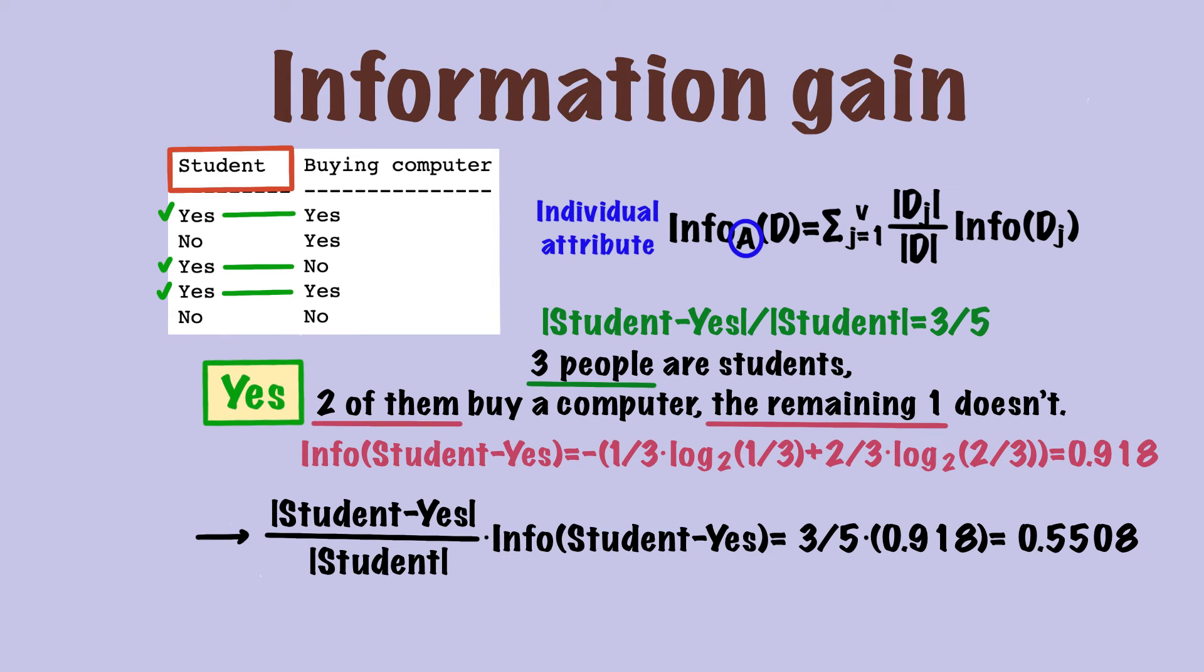Now we have everything we need for class yes. We just take the product of 3 over 5 and 0.918. Then we get the number for yes is 0.5508.